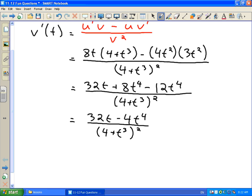We can factor this expression a little bit, factor the numerator. So we'll take out a common factor of 4t to get 4t(8 - t³), all over (4 + t³)².